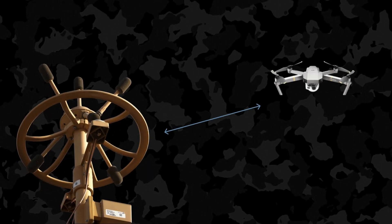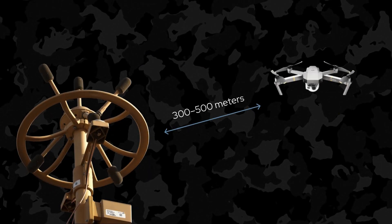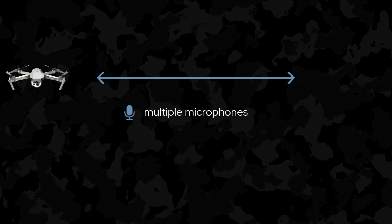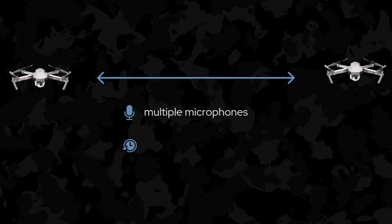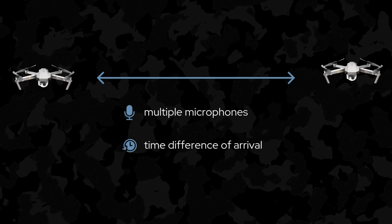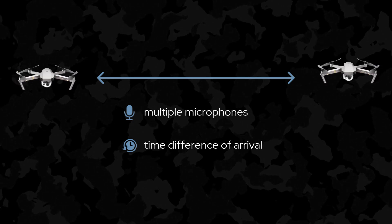Most current systems can only detect drones from 300 to 500 meters. Expanding this range requires deploying multiple microphones and using techniques like time difference of arrival to locate drones across larger areas accurately.